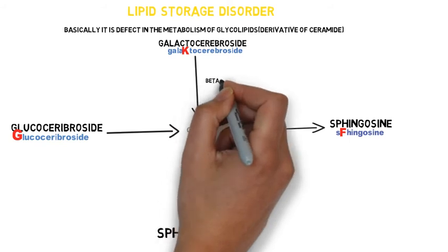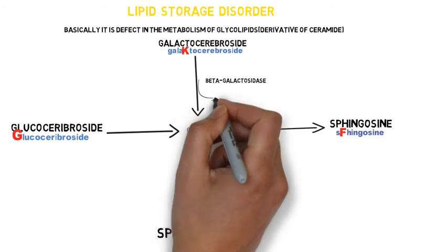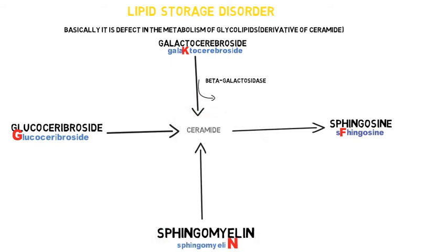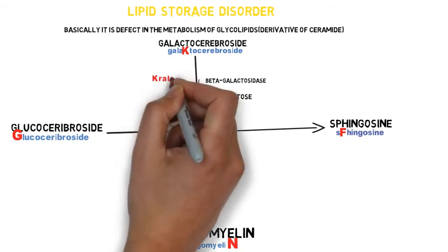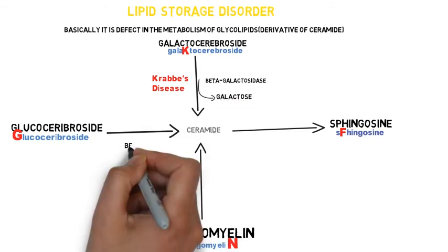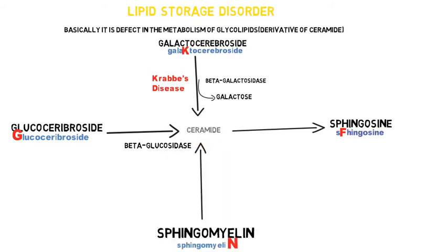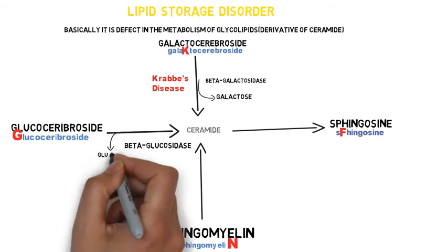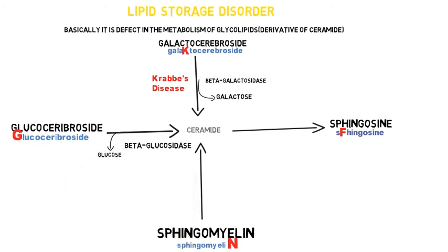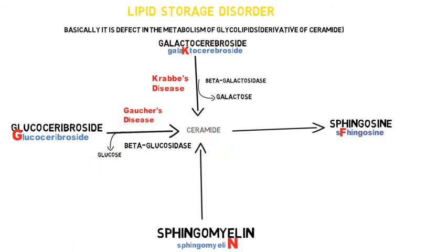When we consider the enzymes: beta-galactosidase removes galactose from galactocerebroside and converts it into ceramide. Any defect in this enzyme will lead to Krabbe's disease. Then we have beta-glucosidase, which removes glucose and converts glucocerebroside into ceramide. Any defect in this enzyme will lead to Gaucher's disease.